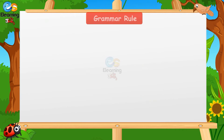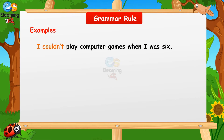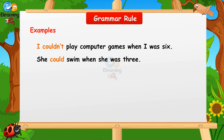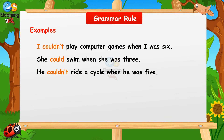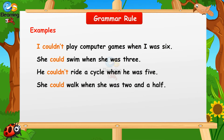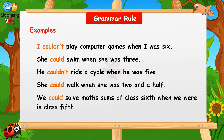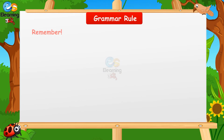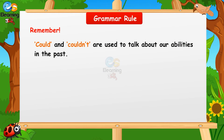Could and couldn't — grammar rule and examples. I couldn't play computer games when I was six. She could swim when she was three. He couldn't ride a cycle when he was five. She could walk when she was two and a half. We could solve math sums of class sixth when we were in class fifth.